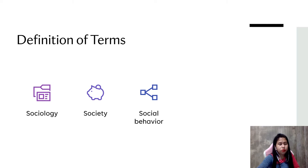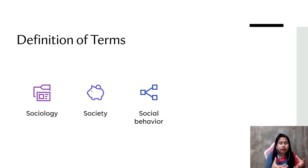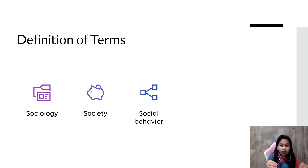Our next word is social behavior. Social behavior is a set of actions performed by individuals of the same species when they interact with each other — the behaviors of people in a group or society when they interact with fellow members. For example, one of our behaviors is that we do 'mano' to our elders, because that is part of our culture. All children do 'mano' to their parents. That is one example of social behavior.